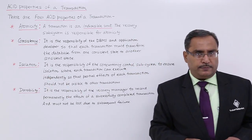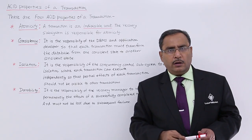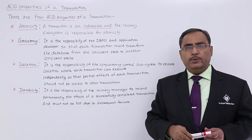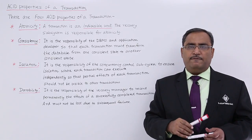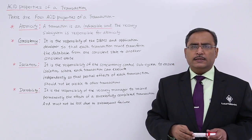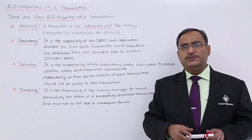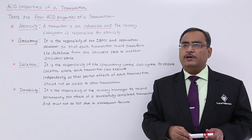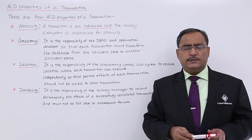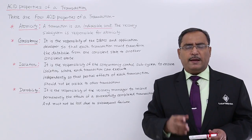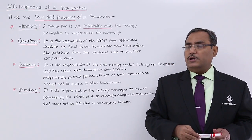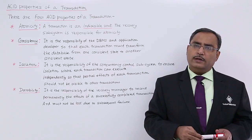The next one is isolation. We know that in parallel, concurrently, so many transactions will be executing and taking place. Each and every transaction will leave its own individual effect onto the database. Whenever multiple transactions are taking place at the same time — say in case of a credit card server, where so many card punches and swipes are taking place — so many transactions are reaching at the same time, concurrently in parallel to the database server. All those transactions will leave their individual effects onto the database.